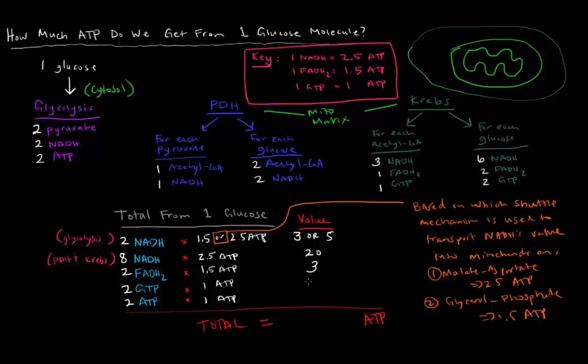The GTP's, there's two of them, and the ATP's, there's two of those. So, if you total this up, 2, 2 is 4, plus 3 is 7, 27. 27 plus 3 is 30, so we either have 30 or 32 ATP from one glucose molecule.